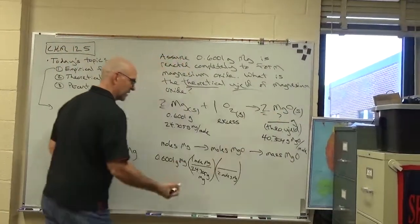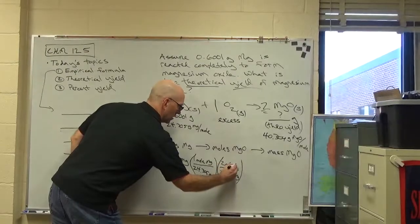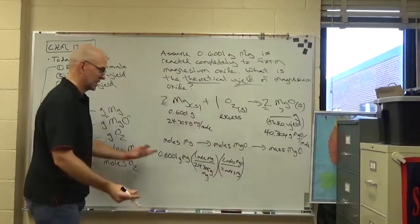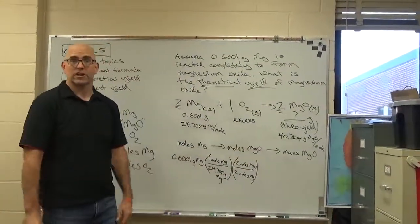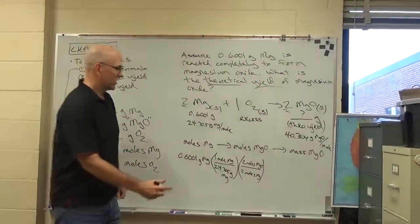So we want to get rid of moles of magnesium. So two moles of magnesium correspond, well that's easy, to two moles of MgO. If you're slick you'll ignore that when you put it into your calculator because it's one over one.